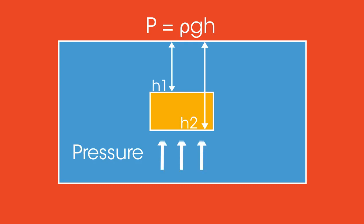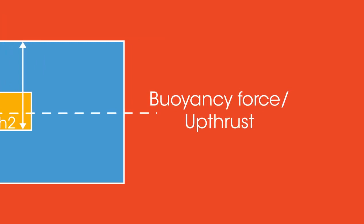This results in there being more force on the bottom surface of the box than there is on the top surface. The difference between these two forces causes there to be a net force upwards called the buoyancy force or upthrust.